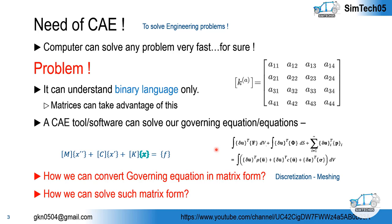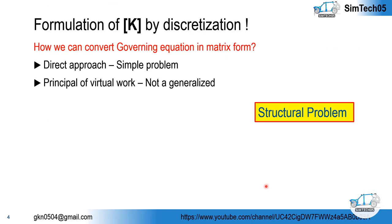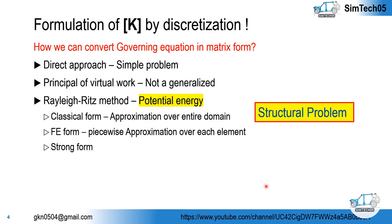After discretization, we have methods to convert our governing equation into matrix form, which we will discuss shortly. And once we have those governing equations in matrix form, we solve them using numerical methods. Now we will talk about discretization and converting governing equations into matrix form — this can be done with the help of a direct approach, the principle of virtual work, and related methods. However, the direct approach is applicable only for very simple problems.